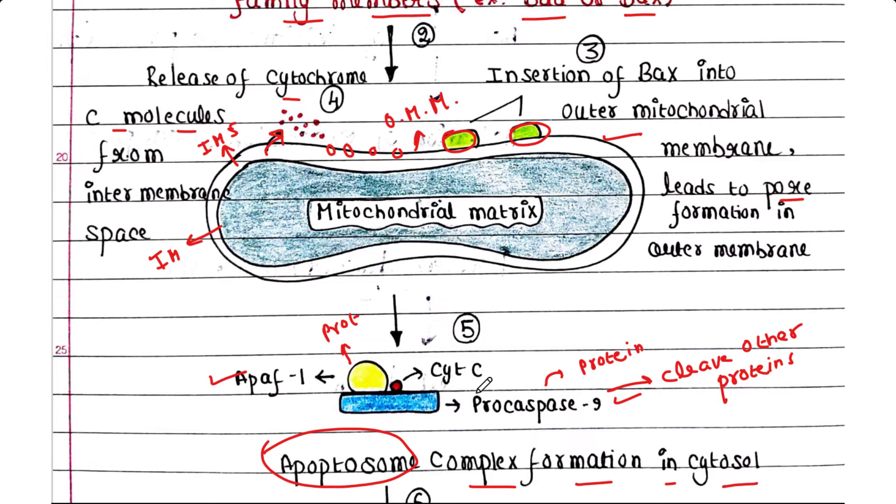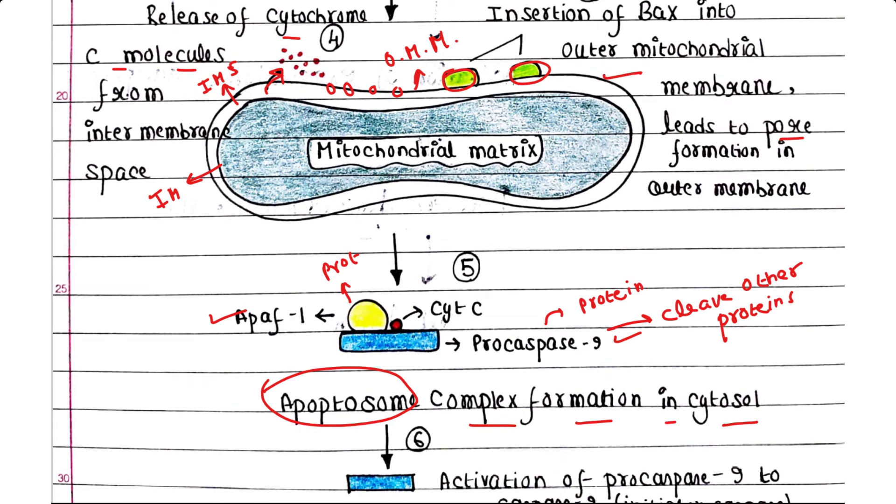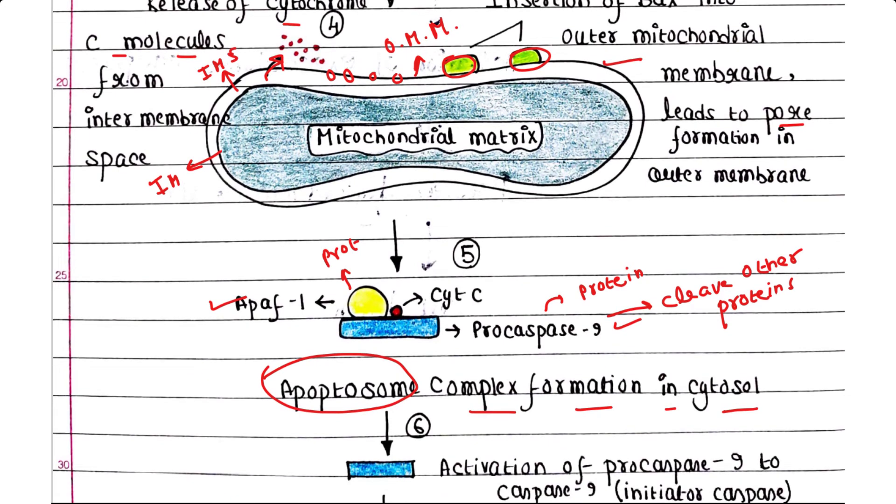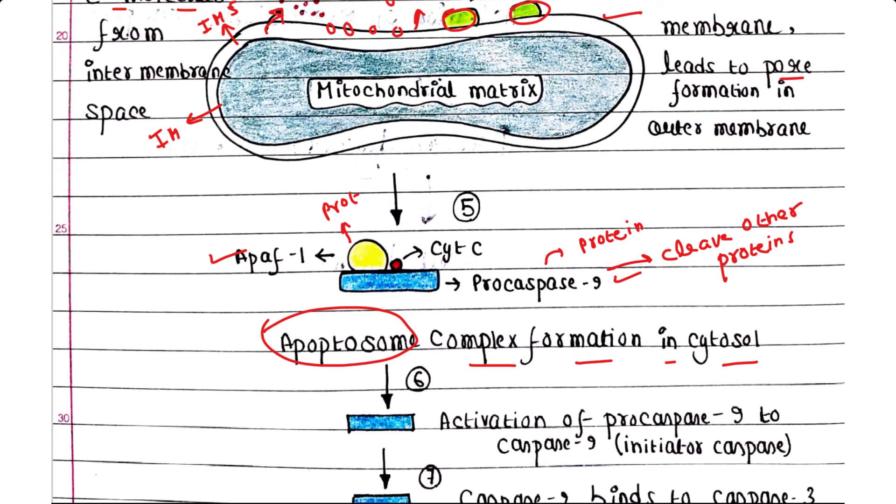This complex is called the apoptosome. Once the apoptosome complex is formed, pro-caspase-9 is now activated. When it was in pro-caspase form, it was inactivated. Once it is in the apoptosome complex, it becomes caspase-9.